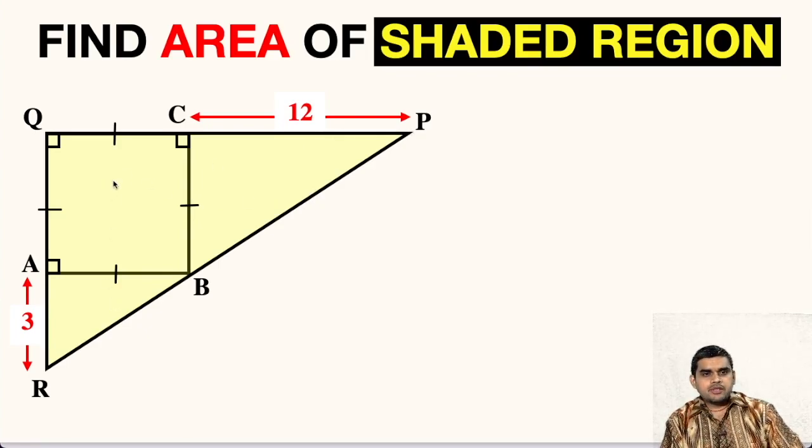In the figure shown, triangle PQR is a right angle triangle at vertex Q. ABCQ is a square. We are asked to find the area of shaded region, that means area of this triangle PQR. But first of all, since the side of this square is not known, let us assume this side as X. This will be X, this side will also be X, so the side of the square is assumed as X.